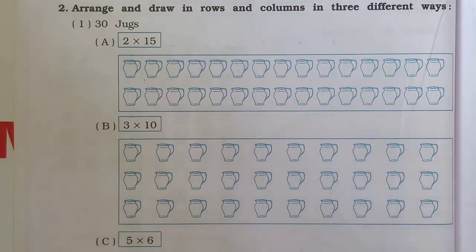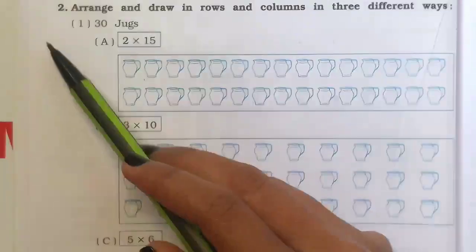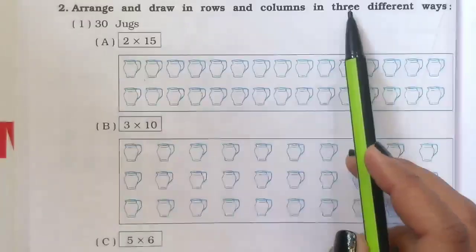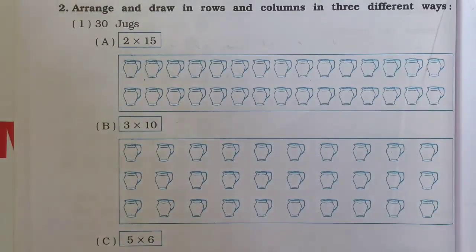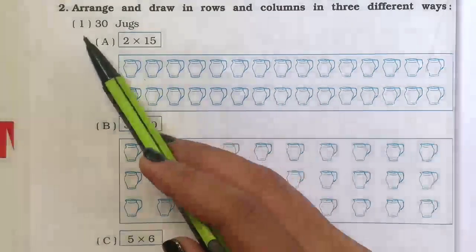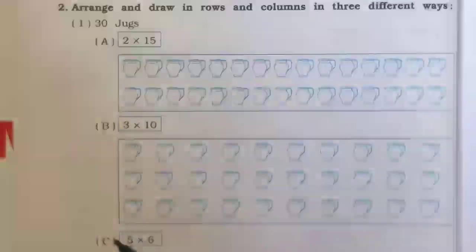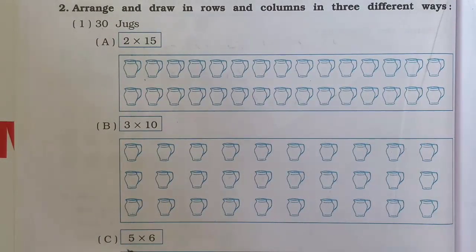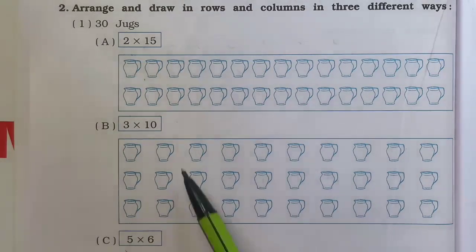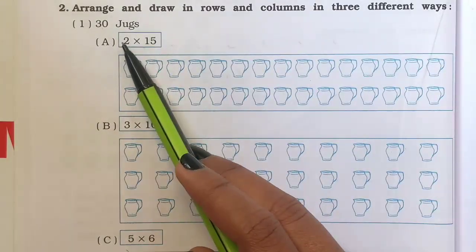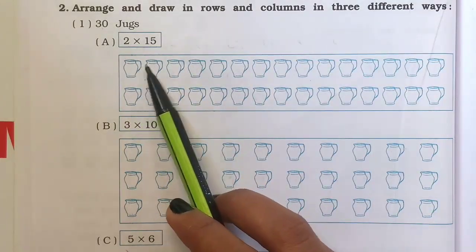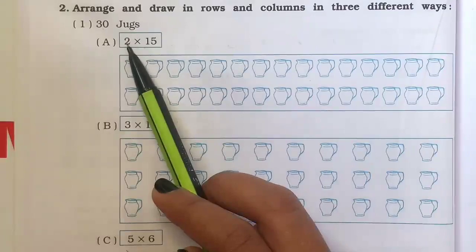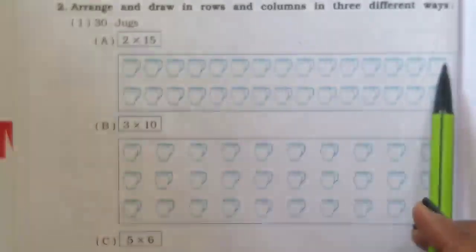Now let's begin Question number 2. Question 2 says: arrange and draw in rows and columns in 3 different ways. Here we have some multiplications. We have to draw pictures. First, we have 30 jugs to show in 3 different ways. The first way is 2 times 15 — we draw 15 jugs 2 times.